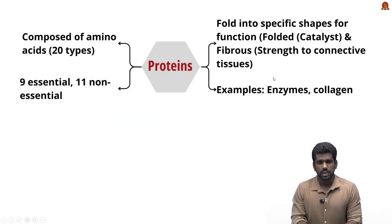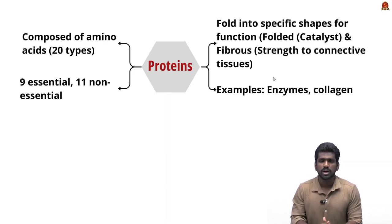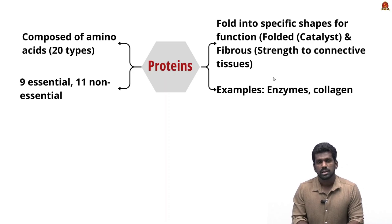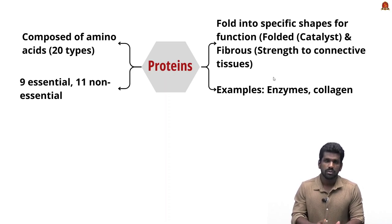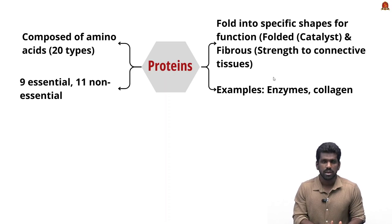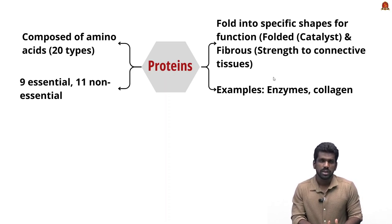Proteins are the building blocks of our body. Proteins are composed of 20 different amino acids — out of these, 9 are essential amino acids and 11 are non-essential amino acids. Essential amino acids must be obtained through diet, while non-essential amino acids can be synthesized by our body itself.